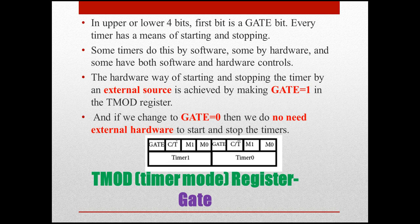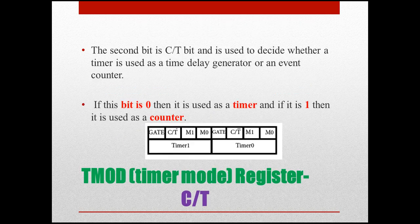The C/T bit selects whether the module operates as a timer or a counter. If C/T is 0, it is a timer; if C/T is 1, it is a counter. We also have the mode bits M0 and M1.